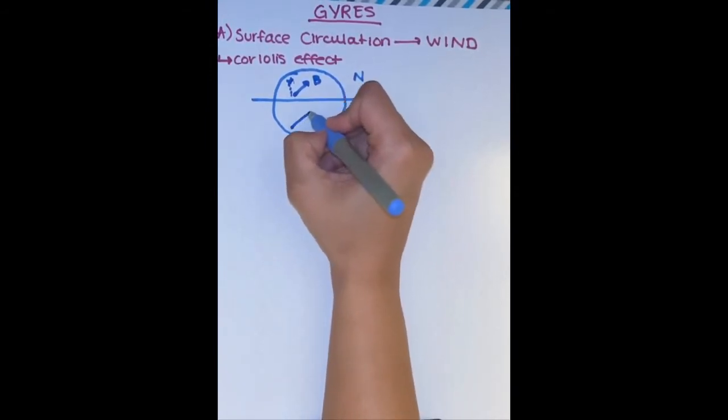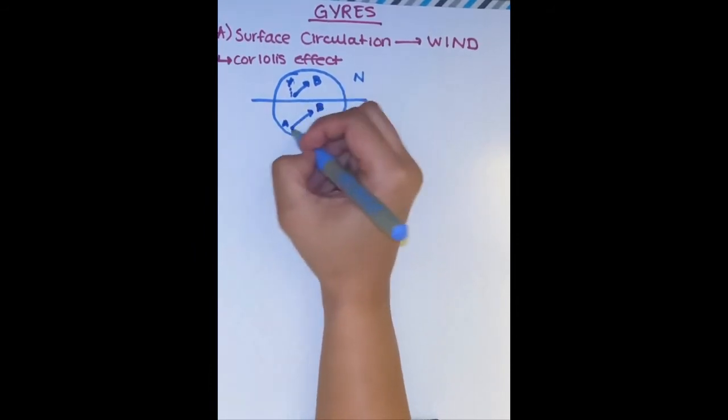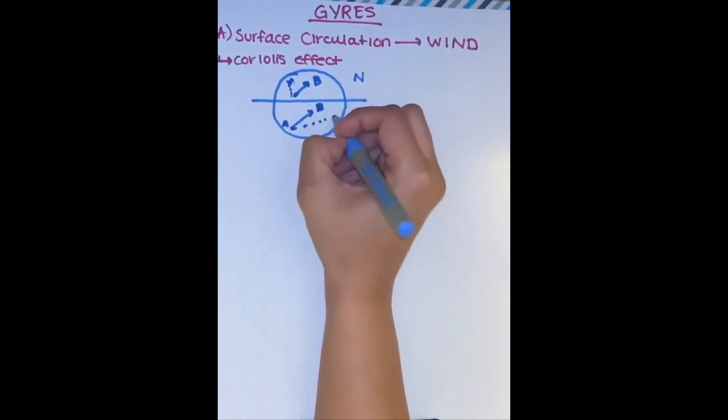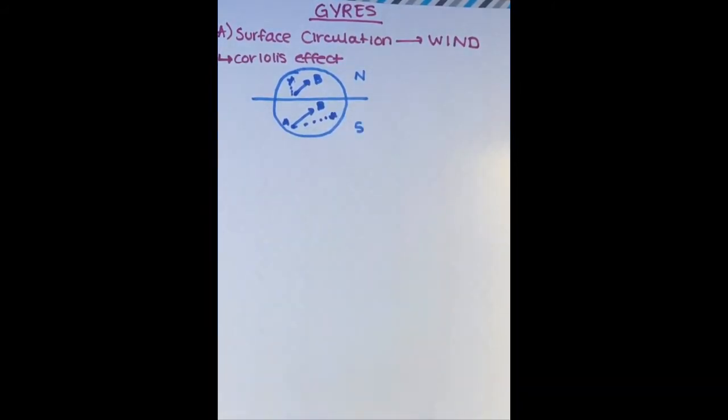This logic also applies for the southern hemisphere. If I start at point A and want to travel to point B, I will have to aim for a point to the right of my destination if I want to account for the Coriolis effect.